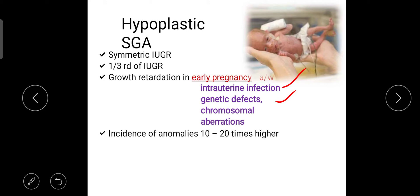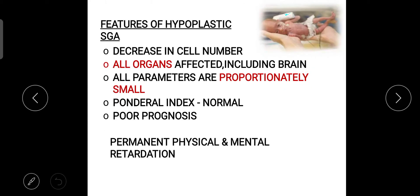Features of hypoplastic SGA: decrease in the cell number, all organs affected including brain, all parameters are proportionally small, ponderal index normal, poor prognosis, and there is permanent physical and mental deterioration.